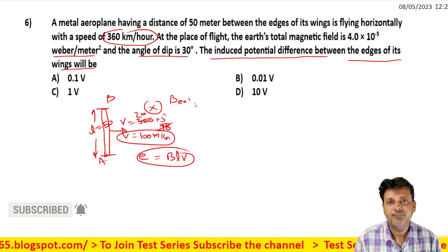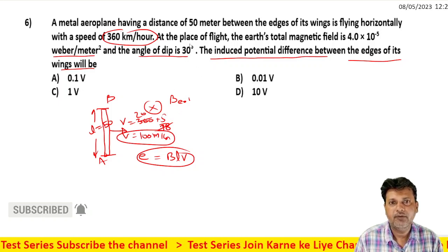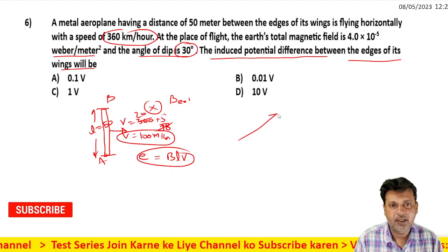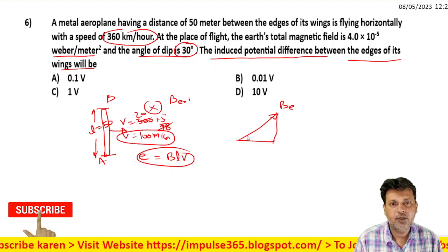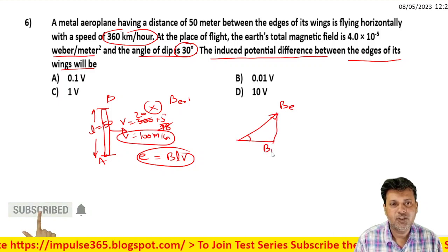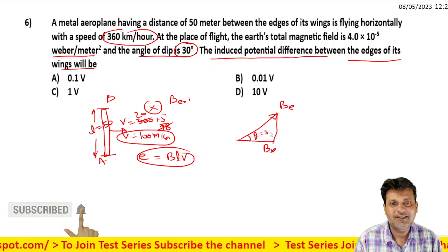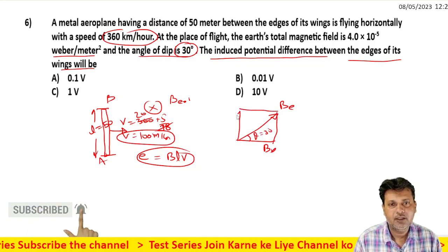The Earth's magnetic field has a horizontal component BH and a vertical component BV, with the angle theta equal to 30 degrees between the total field and the horizontal.